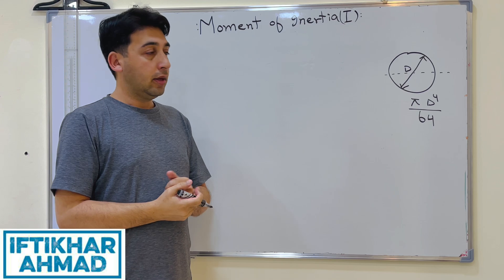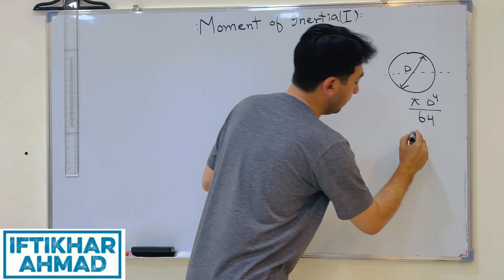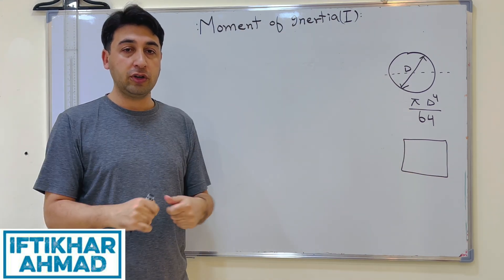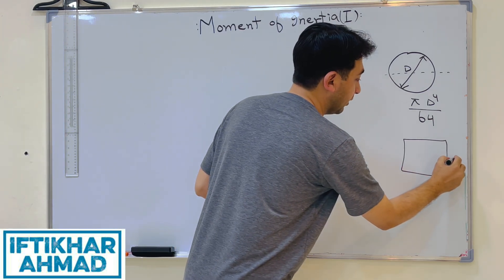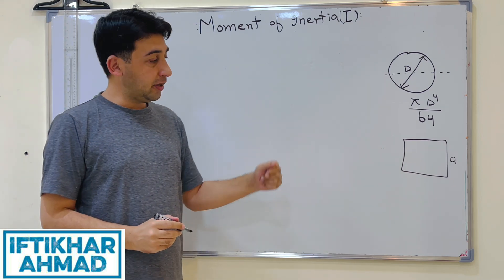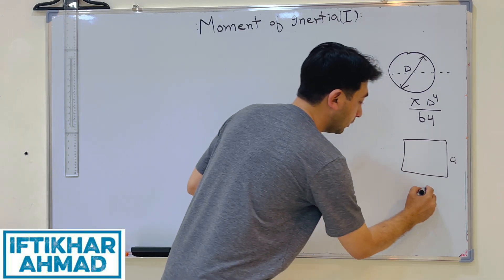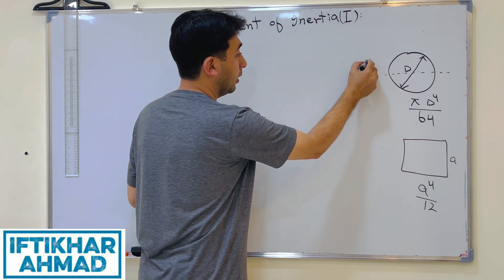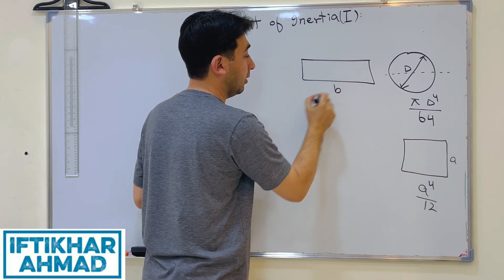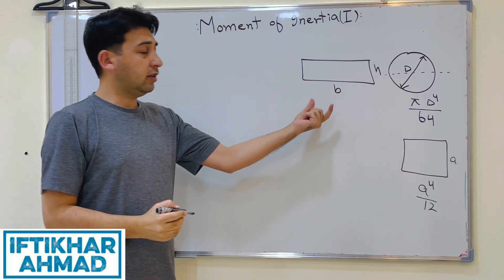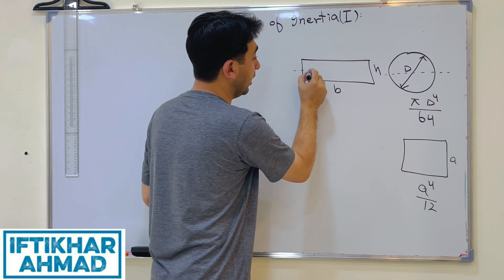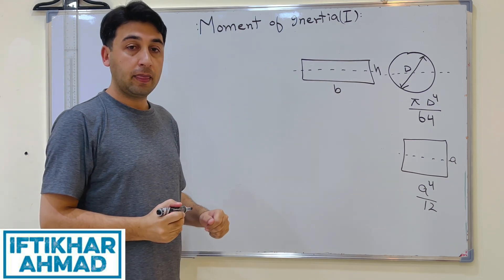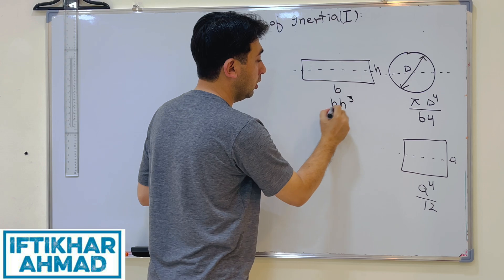If we have a square shape with side length a as the cross-sectional area, the moment of inertia is a⁴/12. If we have a rectangle with base B and height H, the moment of inertia about the horizontal centroidal axis is BH³/12.